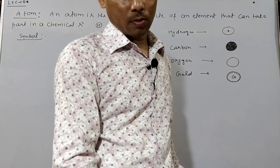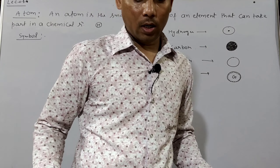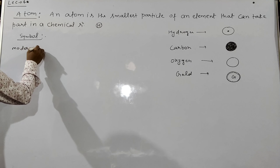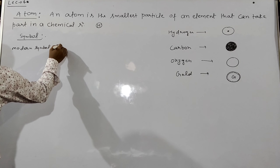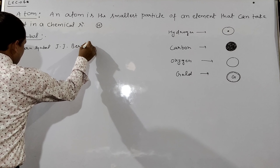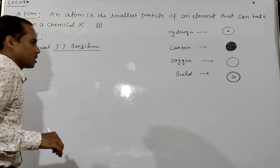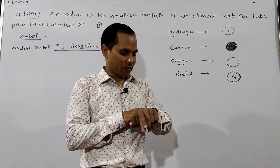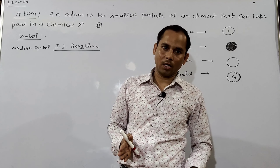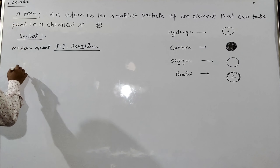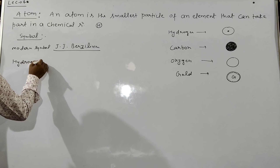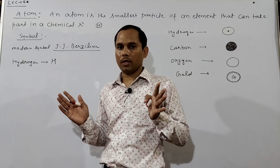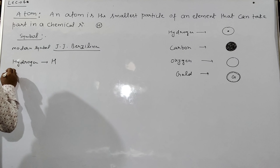That scientist was JJ Berzelius. He gave the modern symbols. His concept was that the first letter of the element's name should become its symbol. For example, hydrogen's symbol is H — whatever the element, its first letter is taken as its symbol. This was simple and easy. Similarly, for helium, the symbol is He.